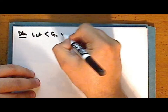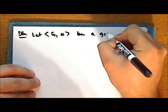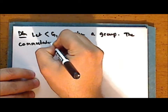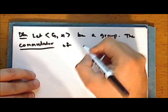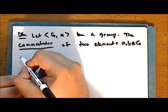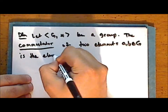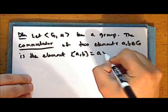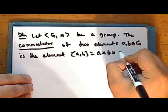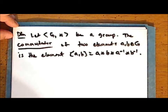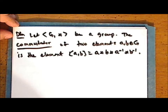New definition. Let the set G together with some binary operation star be a group. The commutator of elements a and b is the element which we denote using square brackets as [a, b], and this is the product a star b star a-inverse star b-inverse. As you might suspect, the commutator is an indication of the degree of commutativity of the elements.